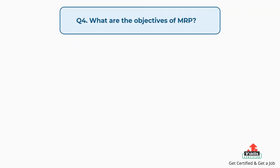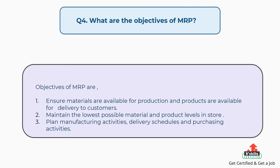Question number four: what are the objectives of MRP? The answer is the objectives of MRP are: 1. Ensure materials are available for production and products are available for delivery to customers. 2. Maintain the lowest possible material and product levels in store. 3. Plan manufacturing activities, delivery schedules, and purchasing activities.